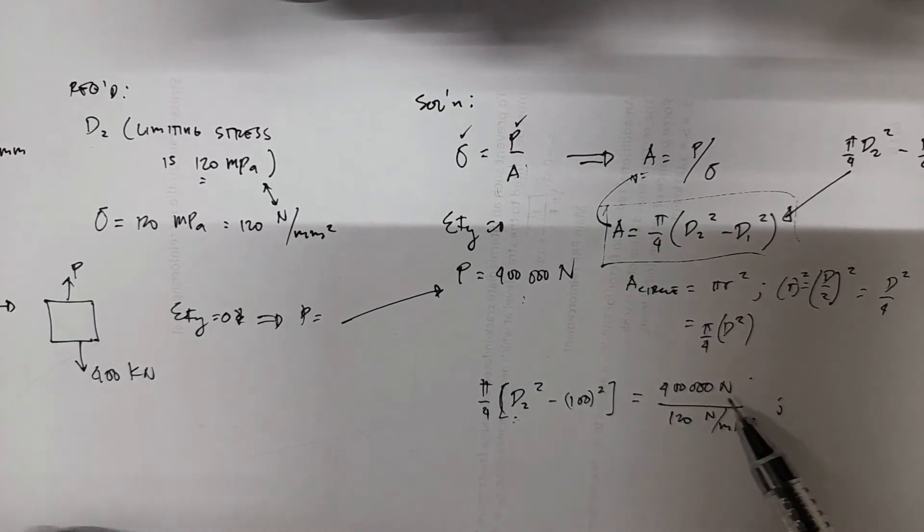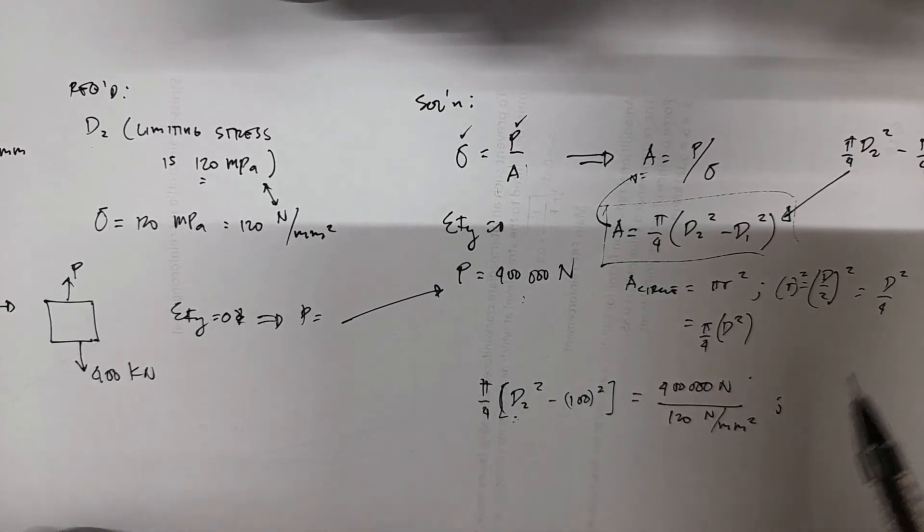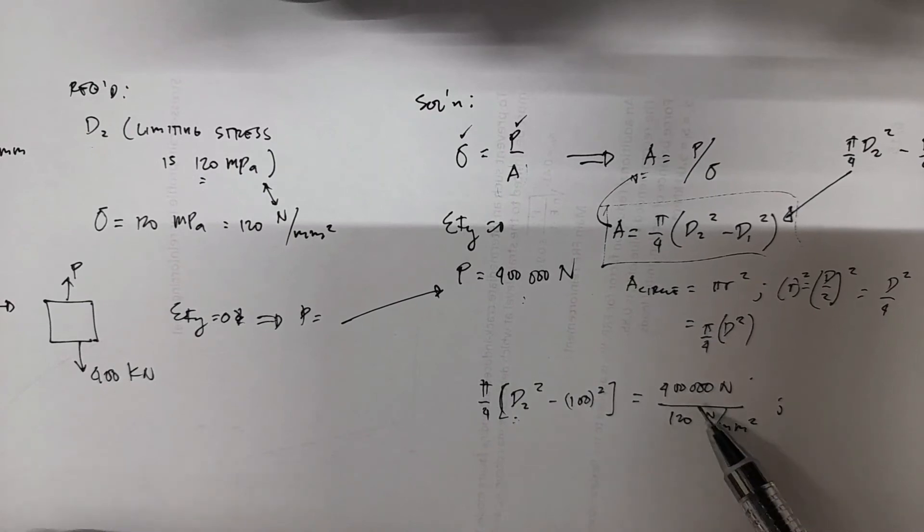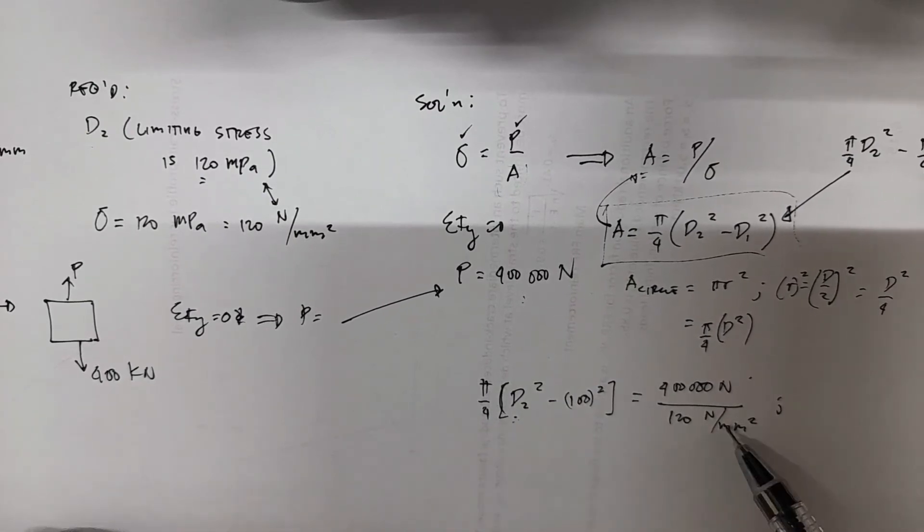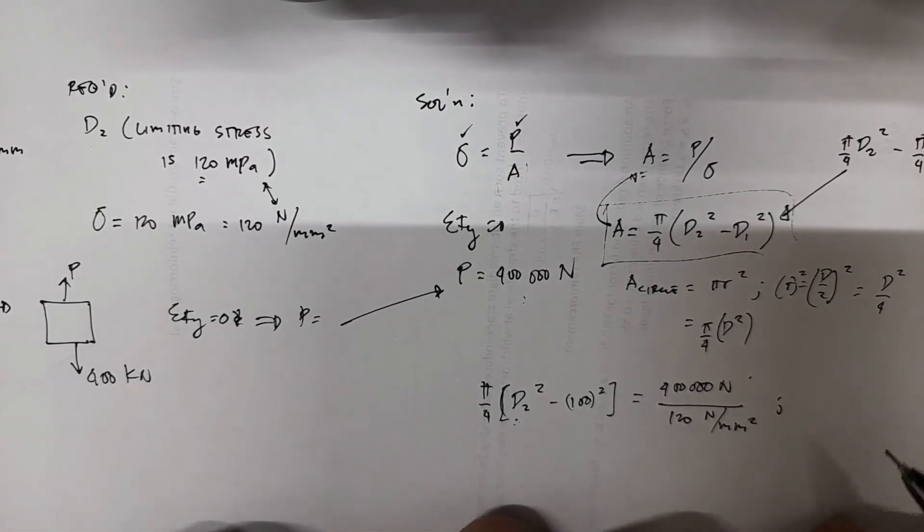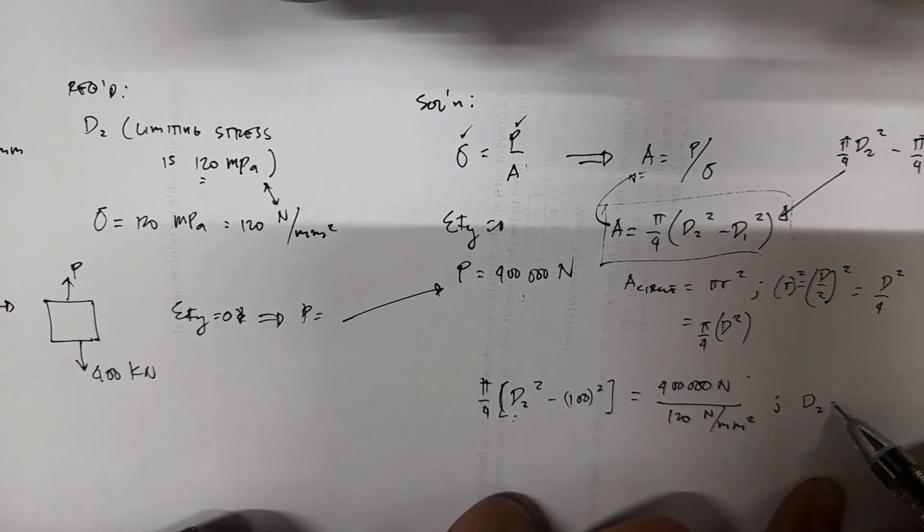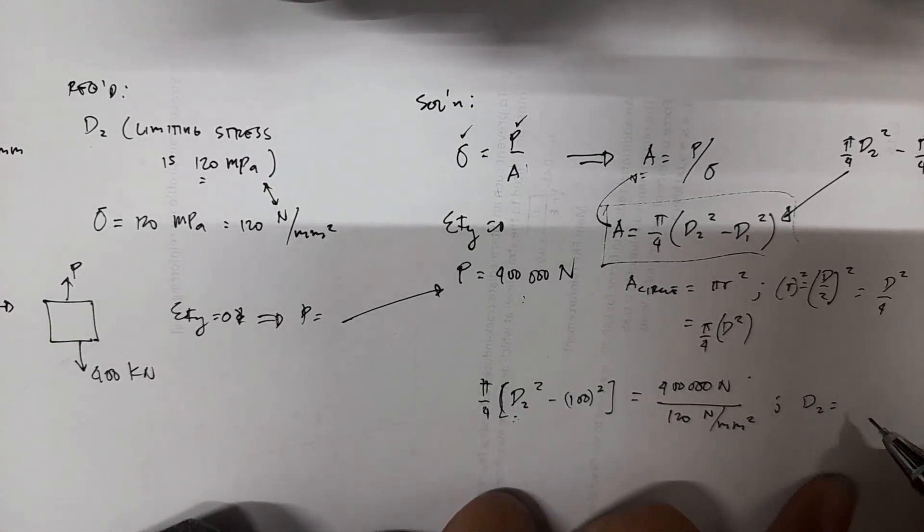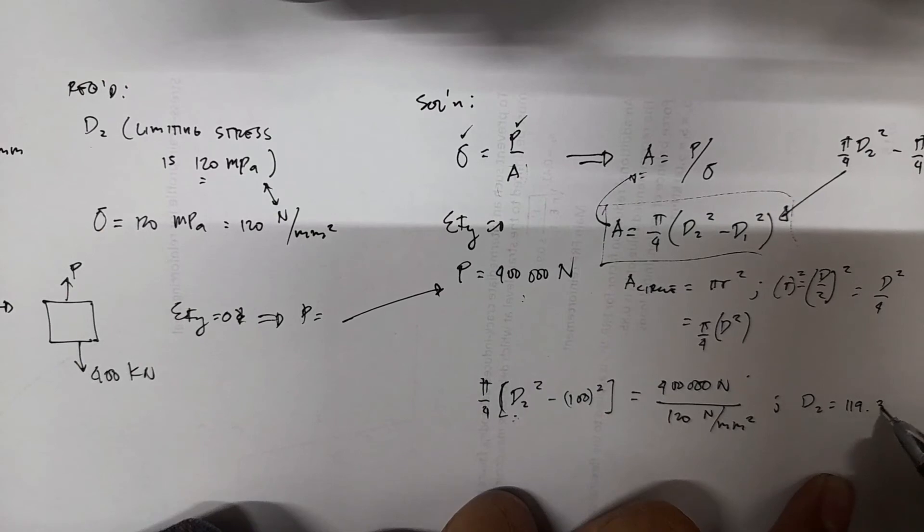Or you can also evaluate this one by one, term by term. You evaluate this first, then divide by pi over 4, and then transfer this, so plus 100 squared, and then you get the square root. So you will have D2 equivalent to 119.35 millimeters.